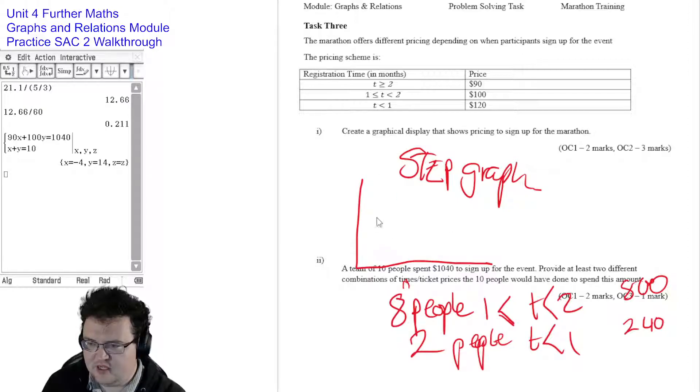Your graph would look something like this. If it's between, so we would say this is 0, 1, 2, you'd obviously use a ruler. If it's less than 1, it's up here at 120. If it's at between 1 and 2, it would be at 100. And then up 2, it would be at 90.